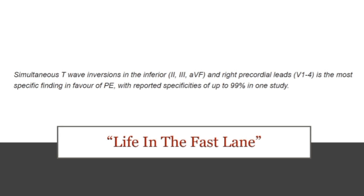This is quoted from Life in the Fast Lane, which states that simultaneous T wave inversions in the inferior and right precordial leads is the most specific finding in favor of pulmonary embolism, with studies reporting a specificity of up to 99% for this sign.